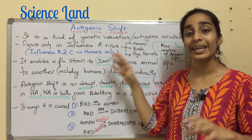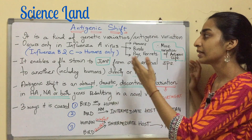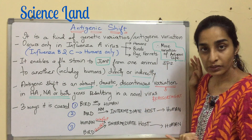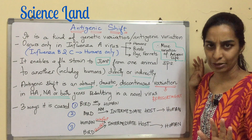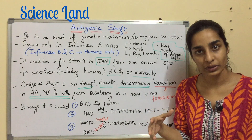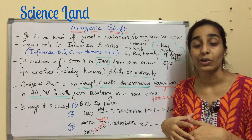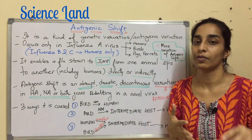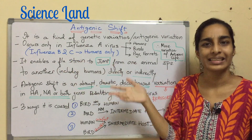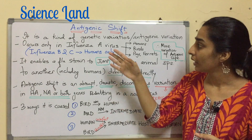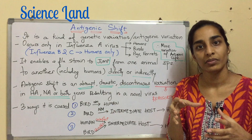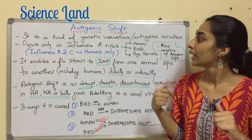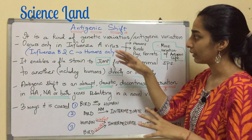Antigenic shift occurs only in influenza A virus. Why so? Influenza A virus has a broad range of hosts — it can infect humans, birds, ferrets, pigs, etc. So more number of hosts means more opportunity to produce different variations. That's the reason antigenic shift is only observed in influenza A virus. On the other hand, influenza B and C infect only humans, so they cannot vary as much in the same human population.